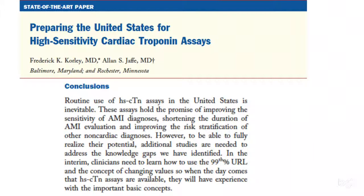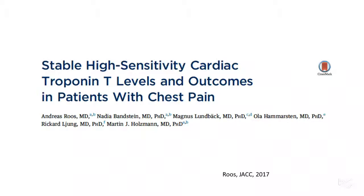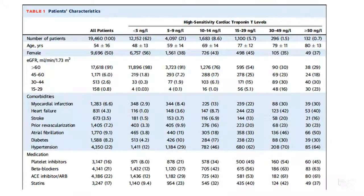There has been a trend across the country to move toward a better way to diagnose myocardial infarction. There have been efforts to find a high sensitivity troponin that will vastly improve the diagnosis of acute MI. The data is based on a study that looked at patients with chest pain who were stratified into different levels of troponin.